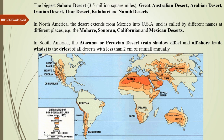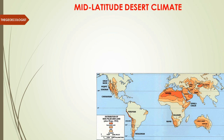In South America, the Atacama or Peruvian Desert lies on the western coast in Peru and Chile. Its formation is due to the rain shadow effect — it is on the leeward side of the Andes Mountains — and also offshore trade winds. The Atacama is the driest of all deserts with less than two centimeters of rainfall.